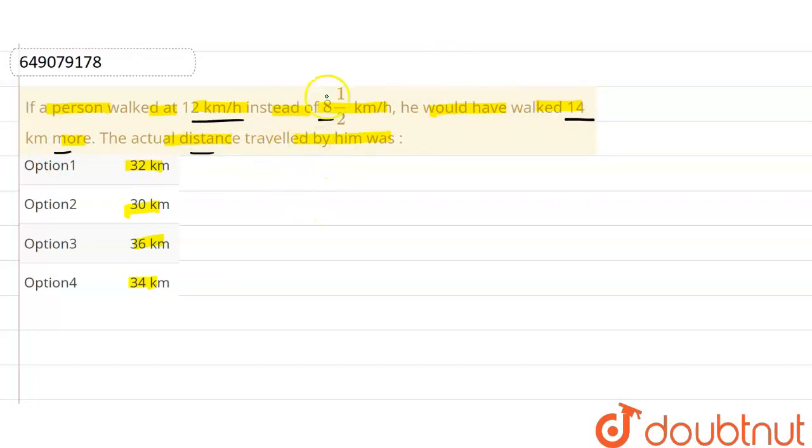What is the difference in speed? 3½ km per hour. The distance difference is 14 km.